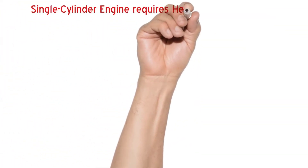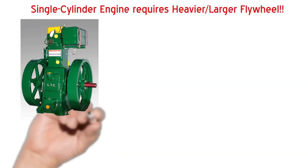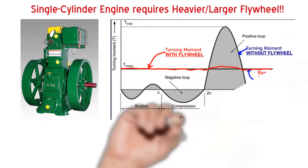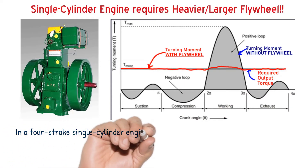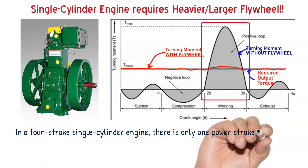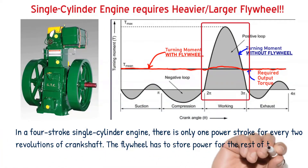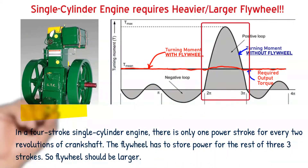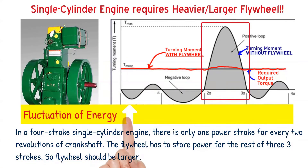Now let us see why single-cylinder engines require a larger or heavier flywheel. This is a typical single-cylinder diesel engine and its corresponding turning moment diagram is shown here. As you can see, there is only one power stroke for every two revolutions of the crankshaft. So we need to store energy during that stroke and the same energy has to be spent across all the other three strokes — meaning a lot of energy needs to be stored.